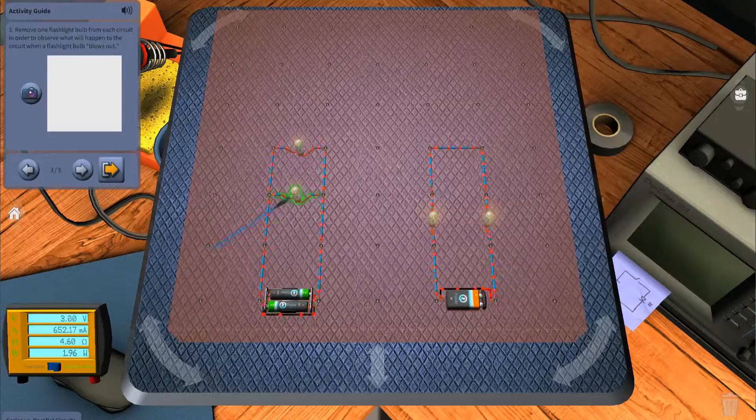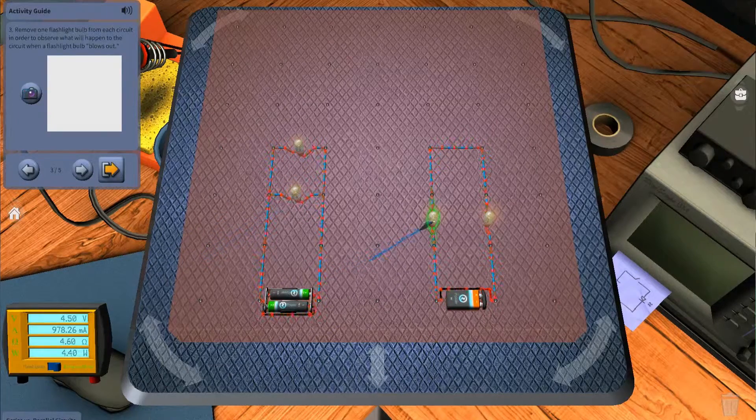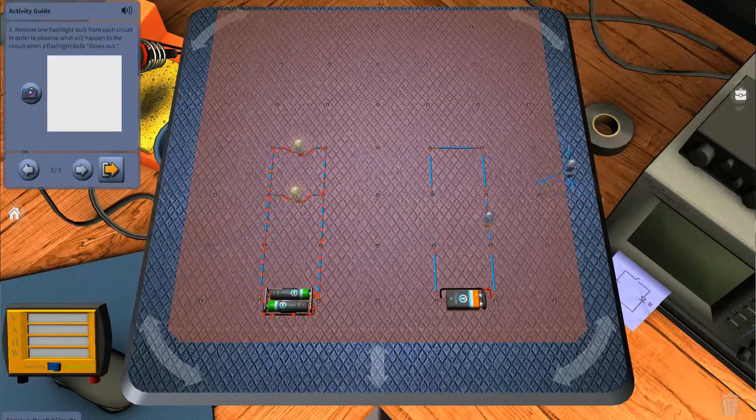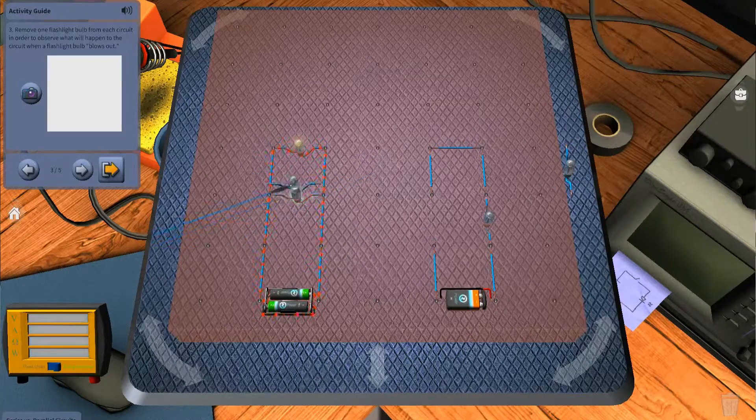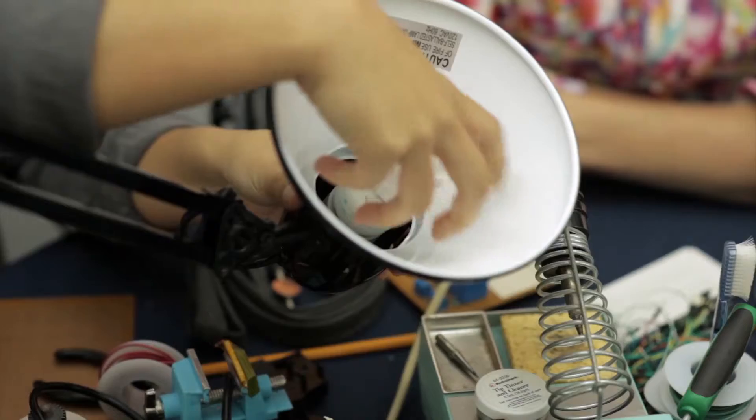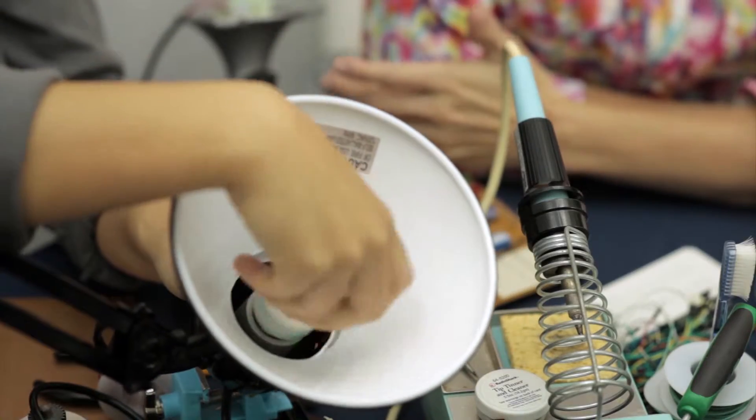Within the activity, students will compare parallel circuit to a series circuit. They will be prompted to predict and demonstrate what happens when a light bulb blows out in each circuit by removing a bulb from the circuit.